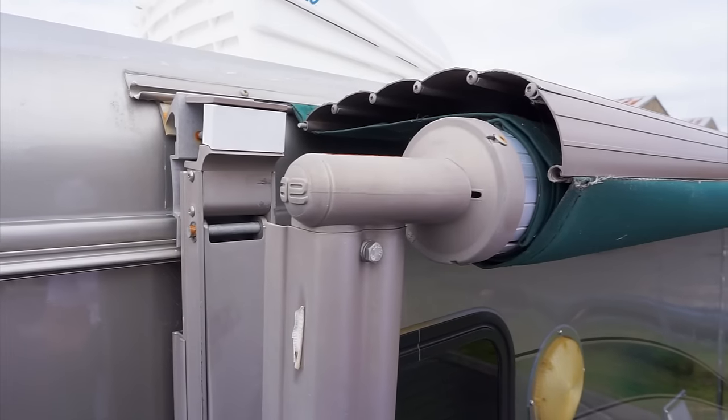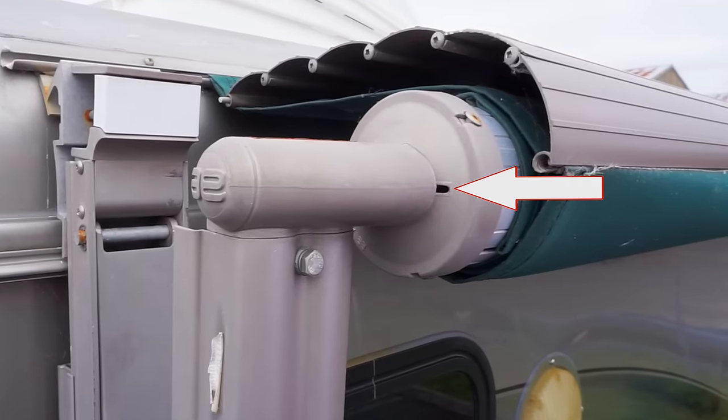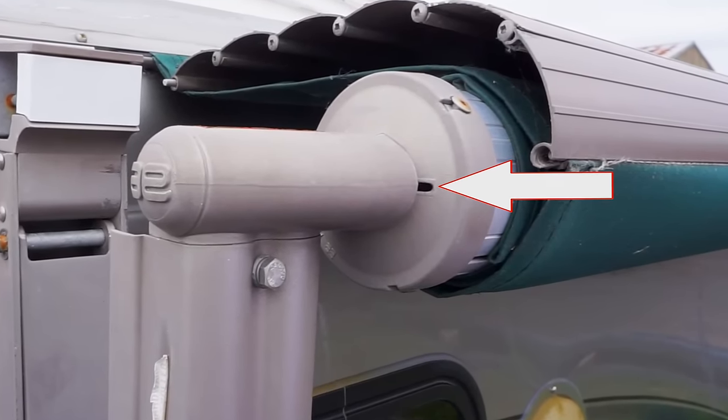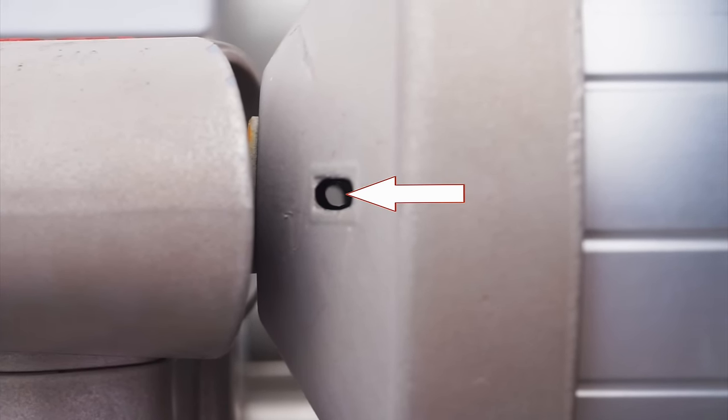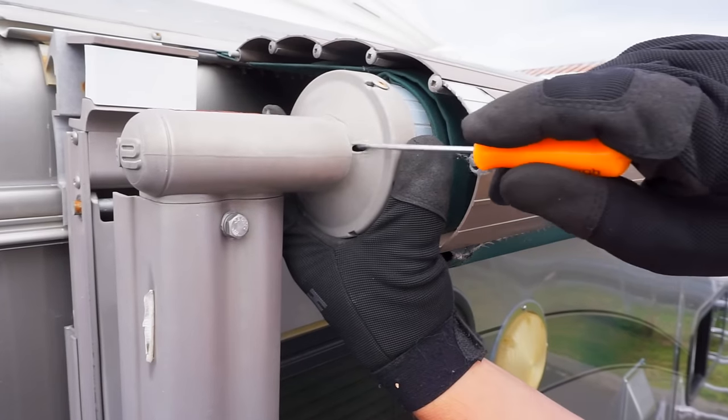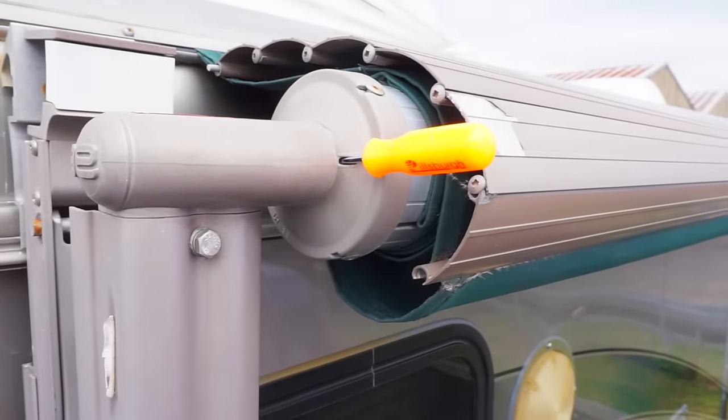Start by extending the awning several inches so the hole at the left end of the roller tube faces outward, away from the RV. If needed, roll the awning in or out a small amount until you can see daylight straight through the hole. Insert a straight pick or other similar tool into the hole in the roller tube, which will pin the spring.